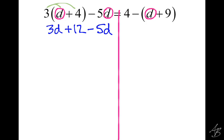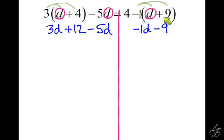On the other side, we're not distributing the 4 because it's not right next to the parentheses. What's right next to the parentheses is just the negative. If we want to put something there, we can put a 1, so we're distributing a negative 1. Negative 1 times D is negative D, and negative 1 times positive 9 is negative 9. So distributing this negative makes both numbers in the parentheses negative. Then we bring the 4 down with an equal sign.